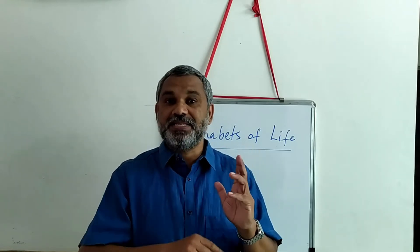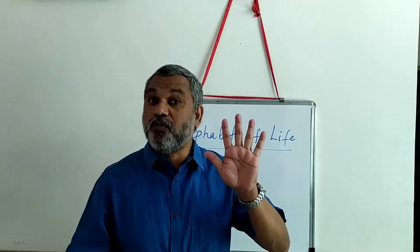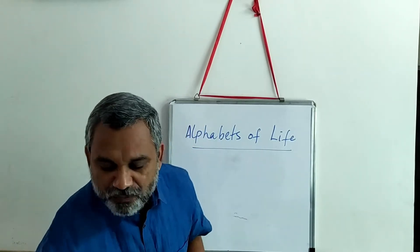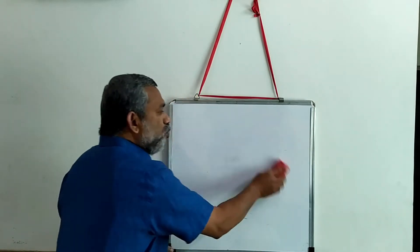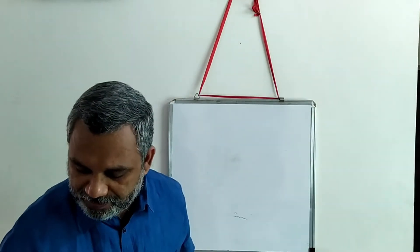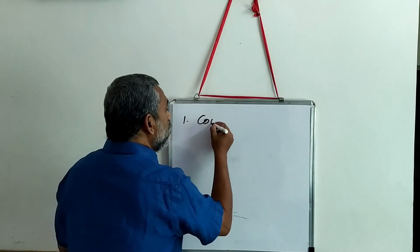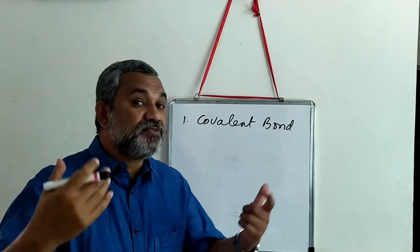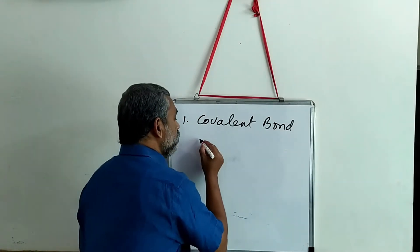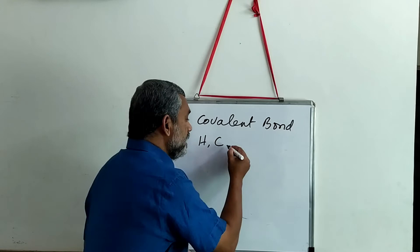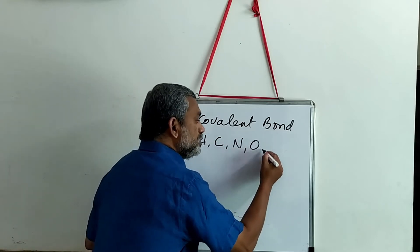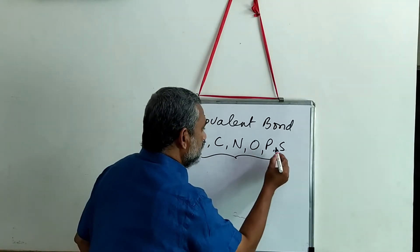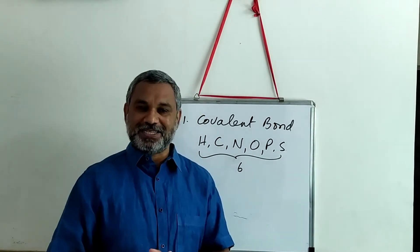If you look at the elements, we can put them under four different categories. The first category of elements falls under the covalent bond-forming elements. Which are these elements? You have hydrogen, carbon, nitrogen, oxygen, phosphorus, and sulphur — about six elements fall under this category.